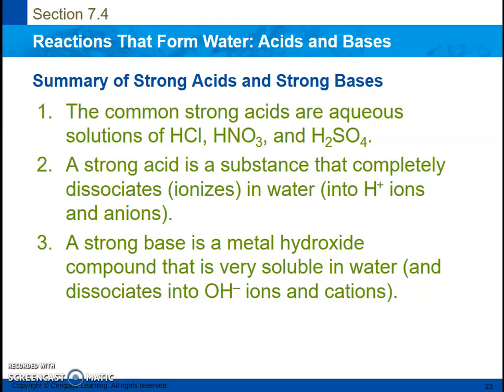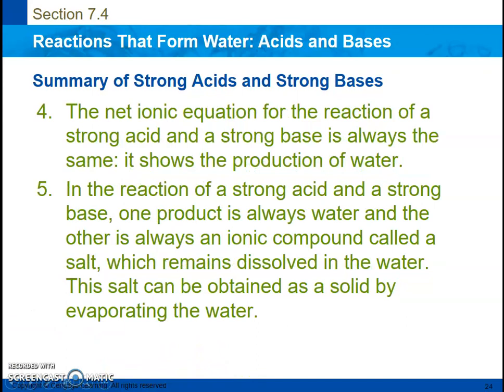A strong base is a metal attached to a hydroxide compound that is very soluble in water — so sodium and potassium — and it breaks down into its cation and its hydroxide ion. The net ionic equation for a reaction of a strong acid and a strong base is always the same: it shows the production of water. A hydrogen ion plus a hydroxide ion yields liquid water — that will always be the net ionic equation for the reaction of a strong acid and a strong base. One product is always water and the other is an ionic compound called a salt, which remains dissolved in the water.